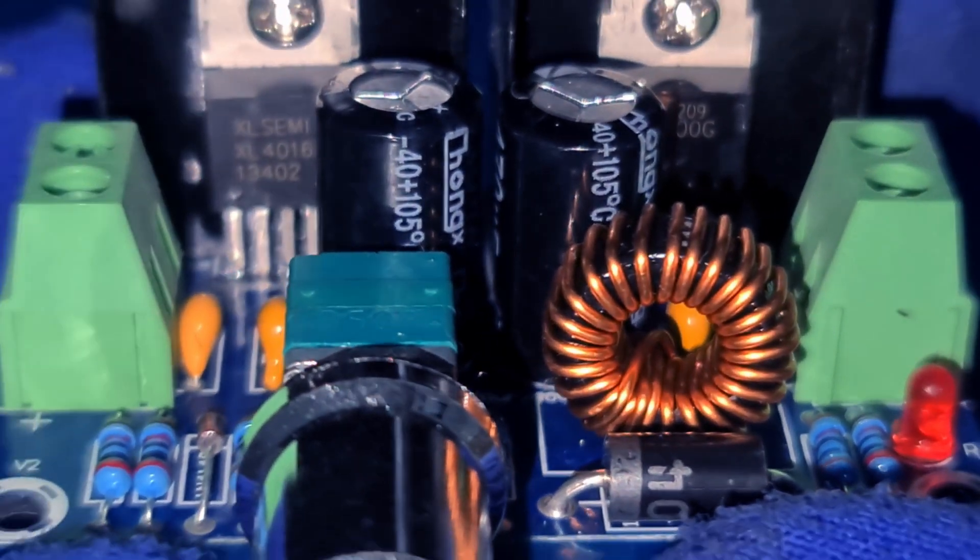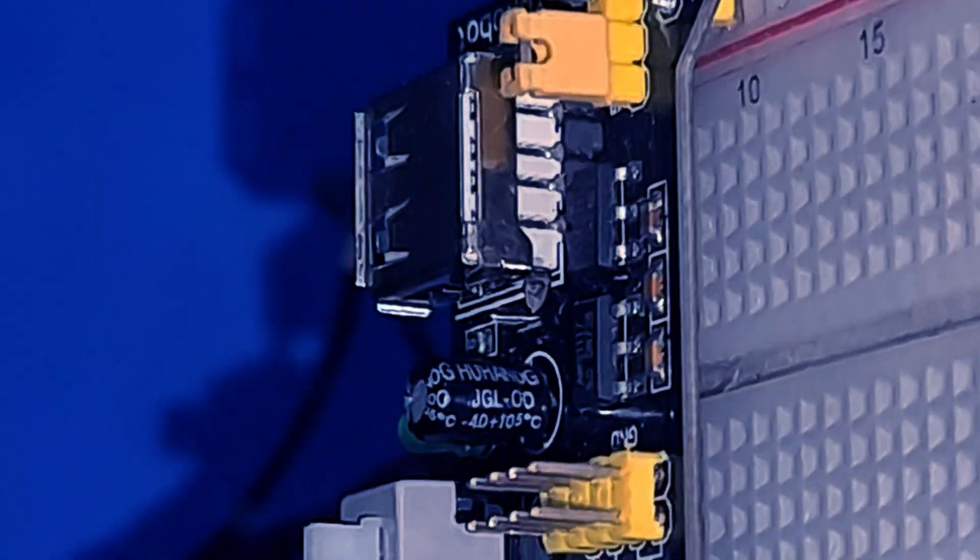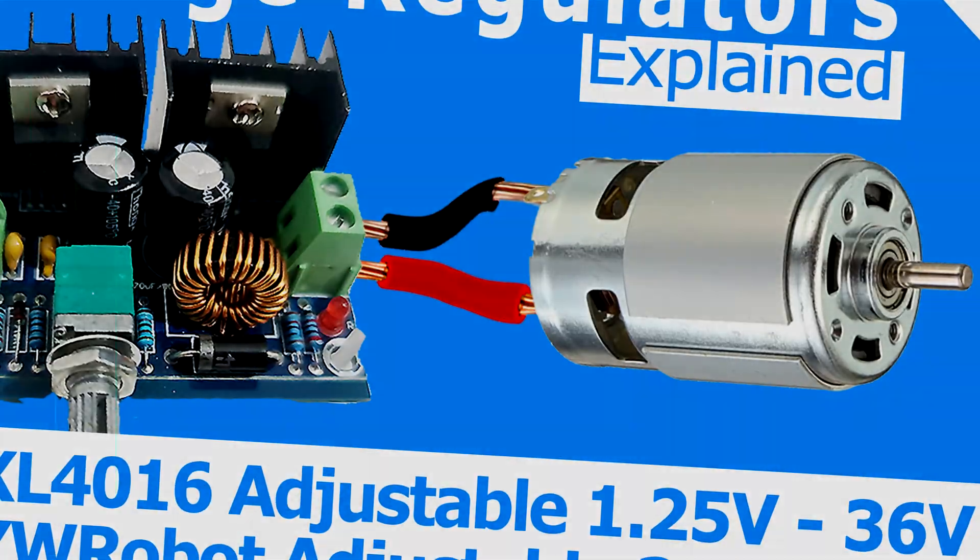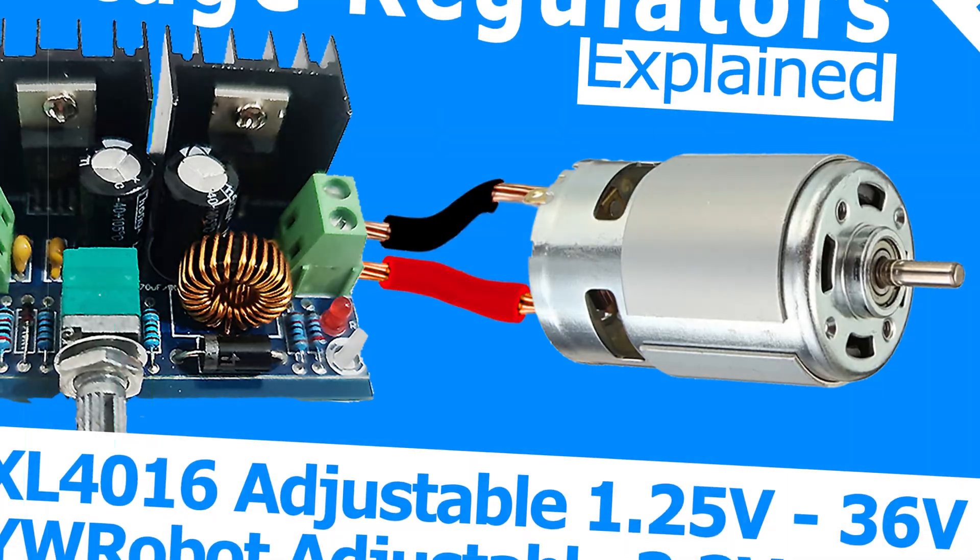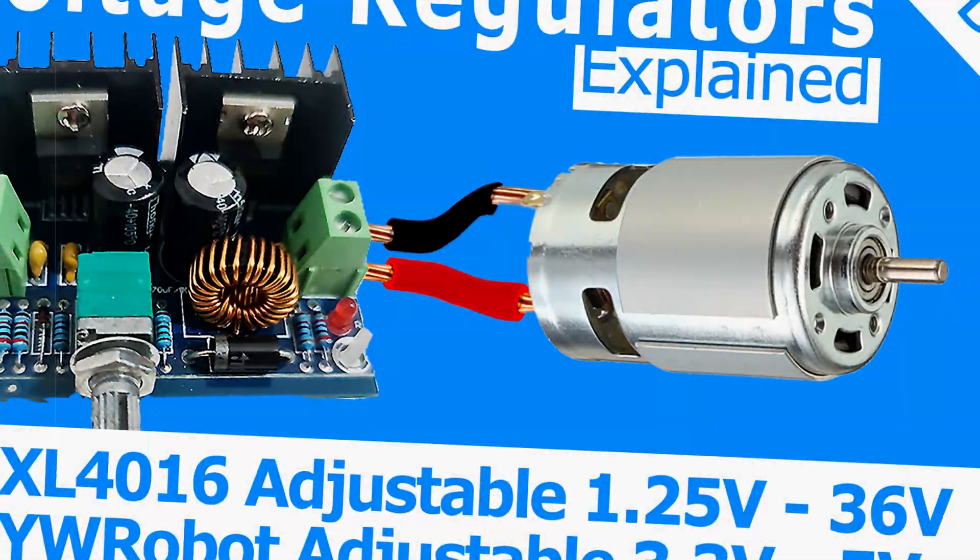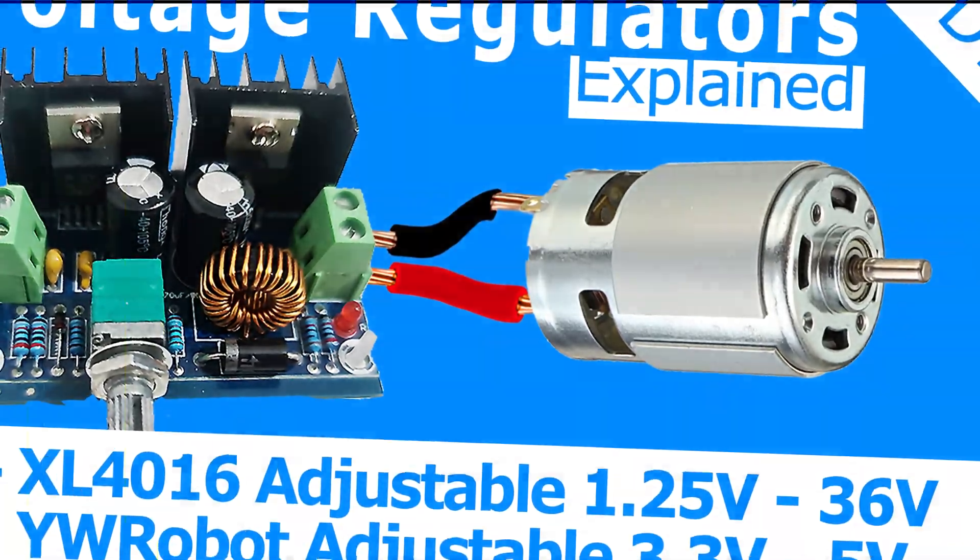Both the XL4016 adjustable buck converter and the YW robot power supply board are fantastic tools for DIY projects. Whether you're working with motors, LEDs, or digital circuits, these modules make power management easy and efficient. If you're serious about electronics, these are must-haves in your toolkit.